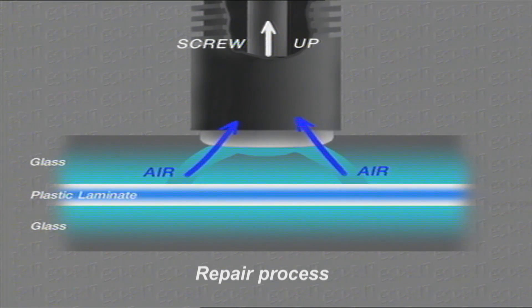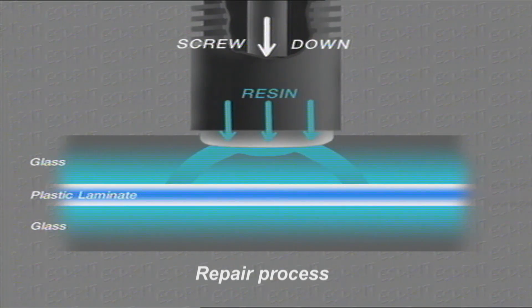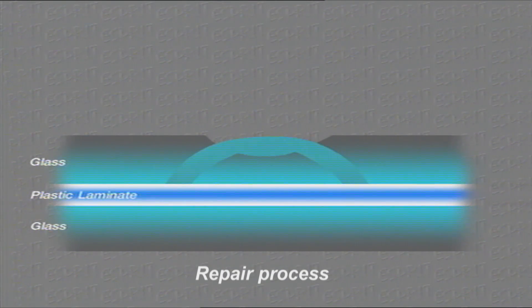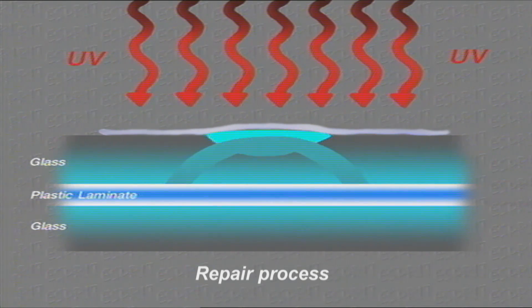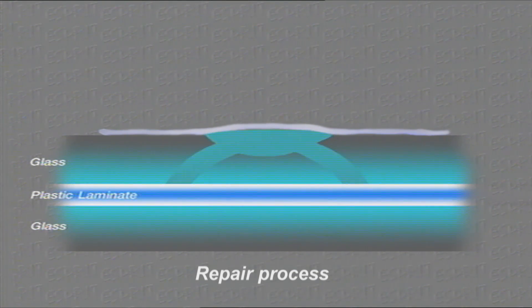This procedure is repeated until the damaged area has been filled with resin and all the air has been drawn out. Pit fill resin is then applied, covered with a plastic patch and cured. The excess resin is removed with a razor blade.